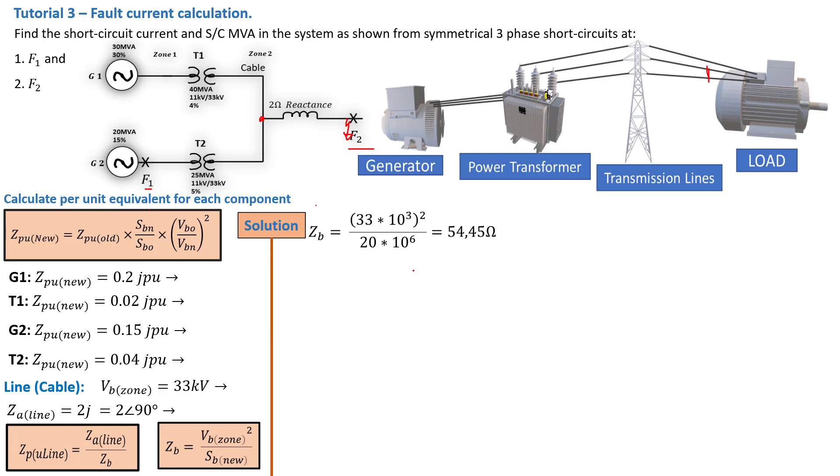Moving forward, ZB is then equal to 33, that is the zone voltage squared in kilovolt squared, over the 20 MVA that we selected for this system. That gives us an impedance of 54.45 ohm. From there we can then calculate the Z per unit of the line. That is 2, which is Z actual divided by ZB, and we find Z per unit of the line of 0.0367J.